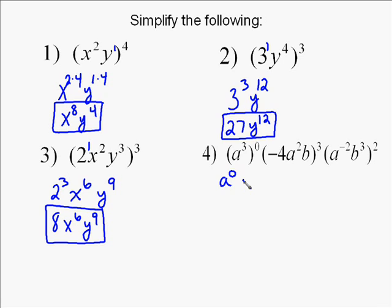And then you need to do all 3 of those things to the 3rd power, so negative 4 to the 3rd power. We're going to put that in parentheses because of the negative. a to the 2nd to the 3rd, so 2 times 3 is 6. And then b to the 1st, which was 1 times 3, which would be 3.